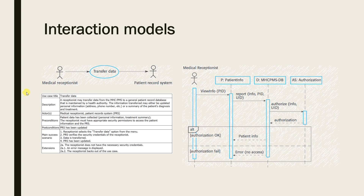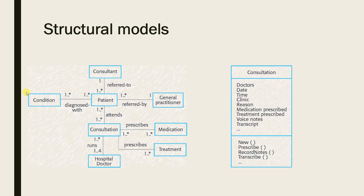The third kind is structural models. Structural models of software display the organization of a system in terms of the components that make up that system and their relationships. Structural models may be static models, which show the structure of the system design, or dynamic models, which show the organization of the system when it is executing. You create structural models when you are discussing and designing the system architecture. UML class diagrams are used when developing an object-oriented system model to show the classes in the system and the associations between these classes.